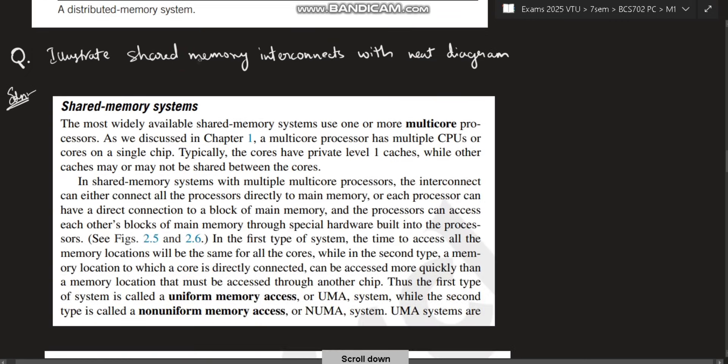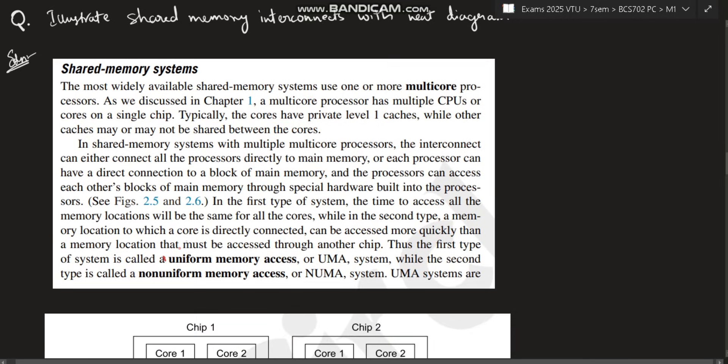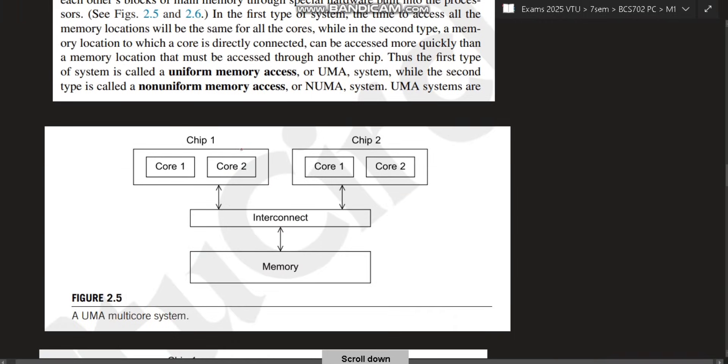Next is illustrate shared memory interconnects with a neat diagram. The most widely available shared memory system or multi-core processor is the multiple CPUs on a single chip. Typically, each will have a private level 1 cache, while other caches may not be shared between the cores. So there are two types of access in it: uniform memory access and non-uniform memory access. In this case, this is a uniform memory access multiple core. Here, there will be different multiple cores in a single chip, and each will be interconnected to the memory. This is a uniform memory access.